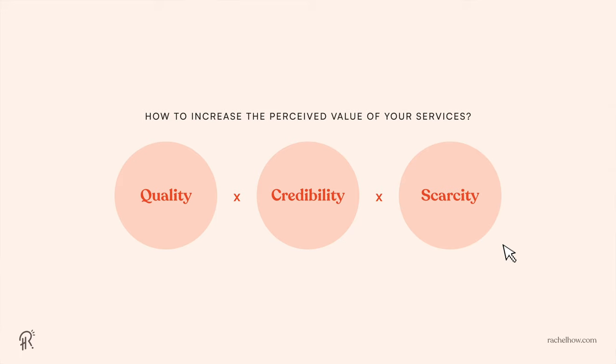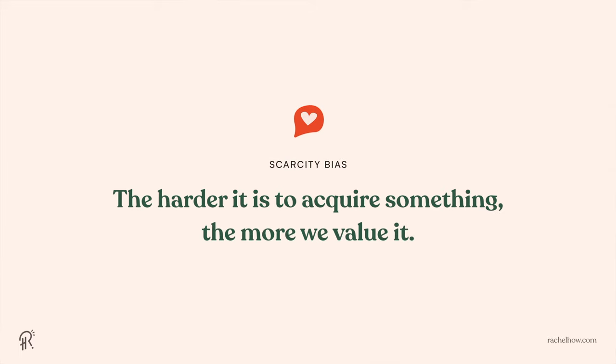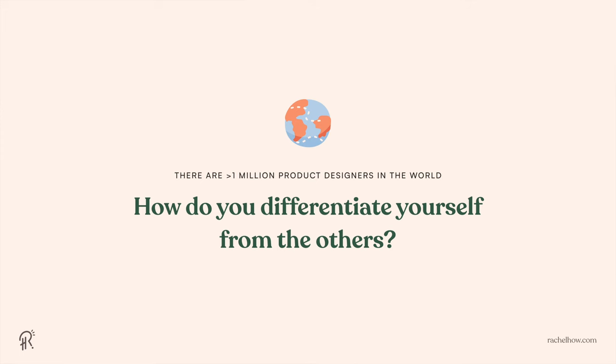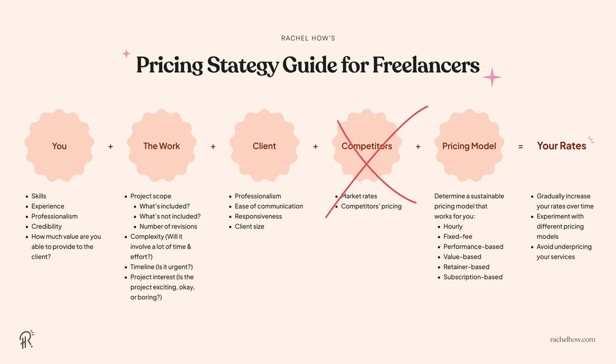Number three: scarcity. Humans have a strong scarcity bias — the more difficult it is to acquire something, the more we value it. If you have unique expertise in a specific industry and only take on a limited number of clients, or have a strong reputation for high quality work, clients are more likely to pay more because you are scarce. Stand out from the competition and clients will choose you, giving you the upper hand in negotiating rates, making market rates less relevant.